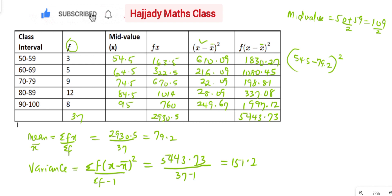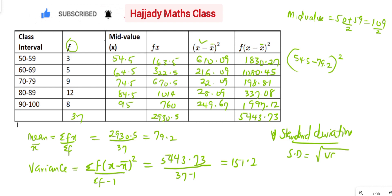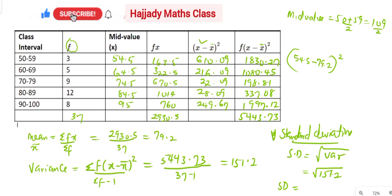We are to get the standard deviation. Our standard deviation, SD, is the same as the square root of our variance, which is the square root of 151.2. And our standard deviation is going to be 12.3. So that is it for the grouped data.